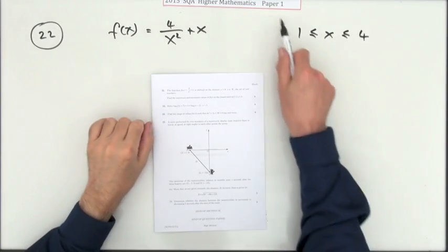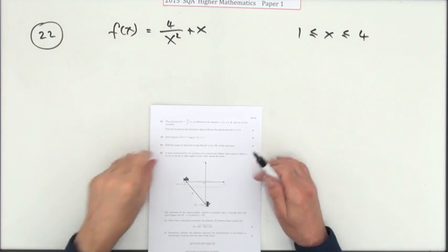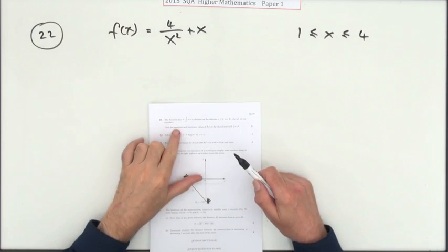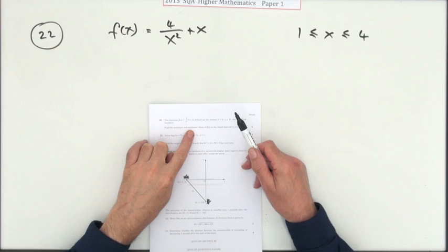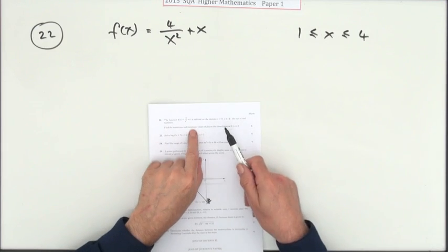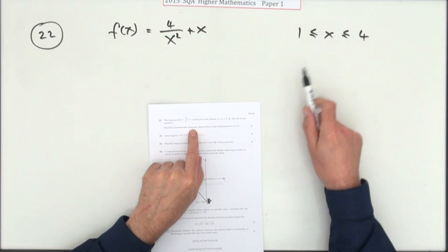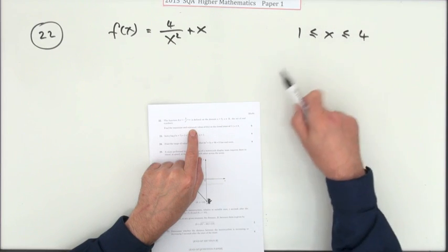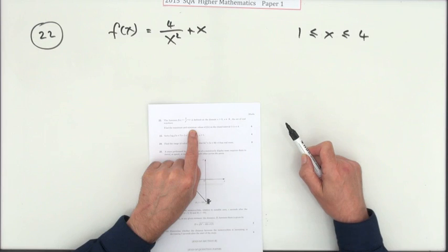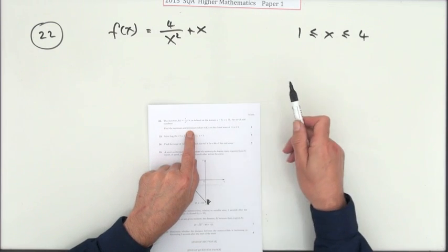Number 22 from paper 1 of the 2015 paper. We've got to find the maximum and minimum values in an interval. Now what happens in an interval is a maximum or minimum value will occur at the endpoints unless there happens to be a turning point, a stationary value, in between.